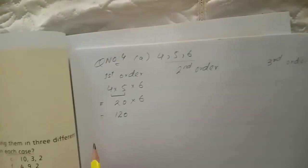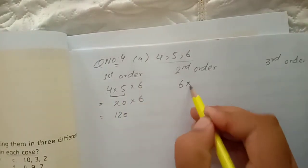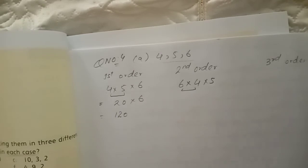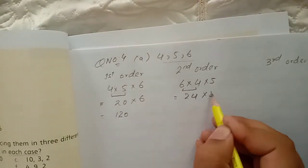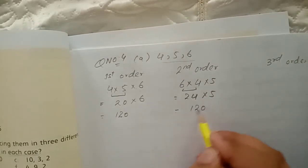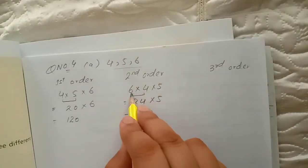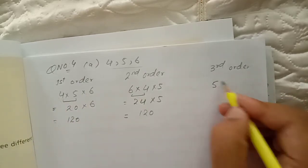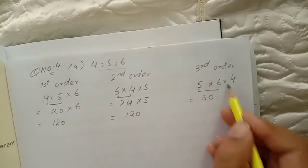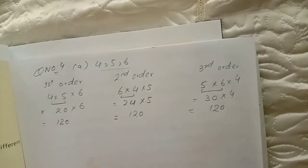In the second order, rearrange the numbers: write 6 first, then 4, then 5. Multiply the first two: 6 × 4 = 24, then 24 × 5 = 120. In the third order, write 5 first: 5 × 6 × 4. Multiply 5 × 6 = 30, then 30 × 4 = 120. In all three cases our answer is 120.